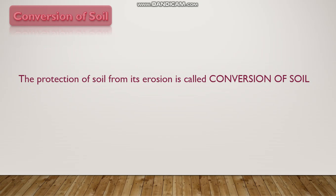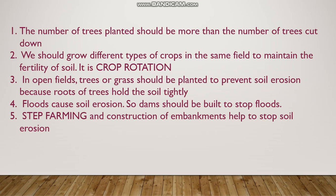Conservation of soil: the protection of soil from erosion is called conservation of soil. Some ways to conserve soil are: the number of trees planted should be more than the number of trees cut down; we should grow different types of crops in the same field to maintain the fertility of soil — this is called crop rotation; in open fields, trees or grass should be planted to prevent soil erosion because roots of trees hold the soil tightly; dams should be built to stop floods; and terrace farming and construction of embankments also help to stop soil erosion.